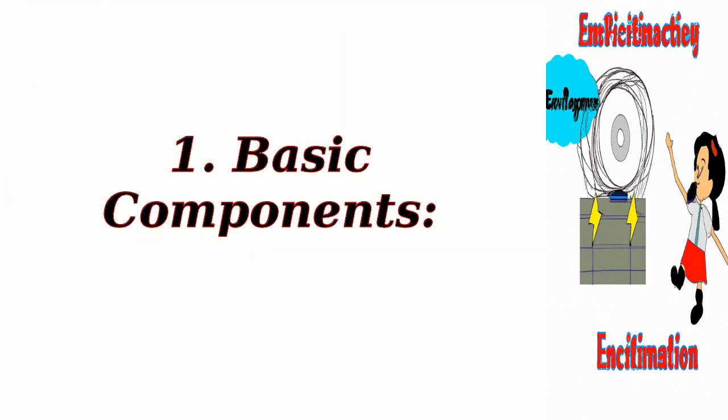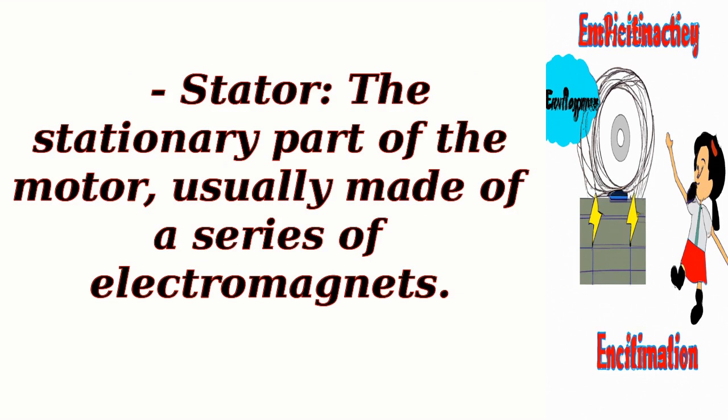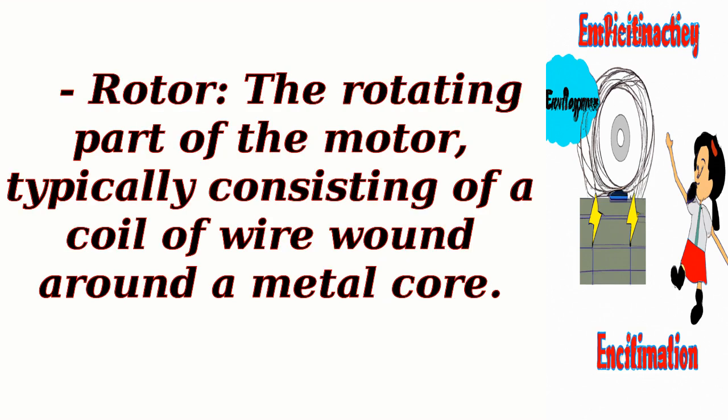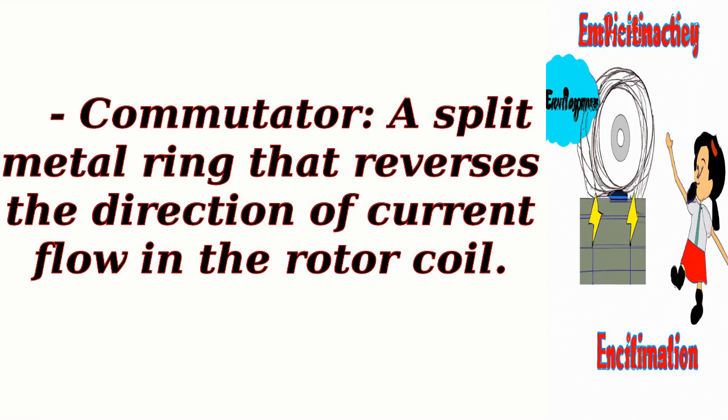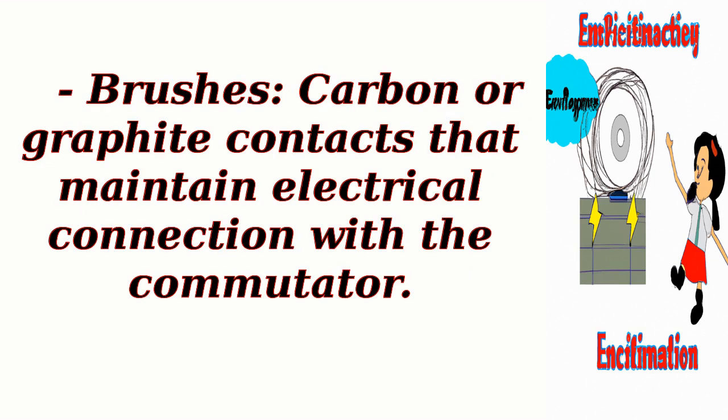Basic components: The stator is the stationary part of the motor, usually made of a series of electromagnets. The rotor is the rotating part of the motor, typically consisting of a coil of wire wound around a metal core. The commutator is a split metal ring that reverses the direction of current flow in the rotor coil. Brushes are carbon or graphite contacts that maintain electrical connection with the commutator.